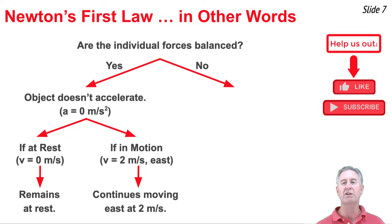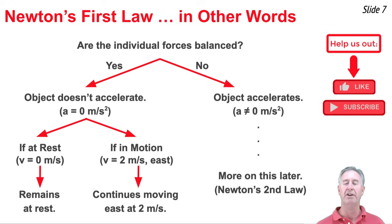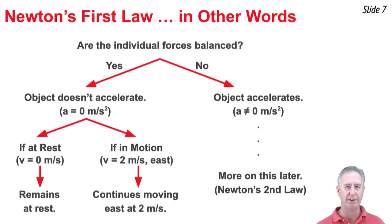If the answer to this original question is no, the individual forces on the object are not balanced, they're unbalanced, then what we have to conclude is that the objects will accelerate. And the acceleration value, well, we'll talk more about that later. Because that's now Newton's second law of motion. Let's not jump ahead of ourselves.